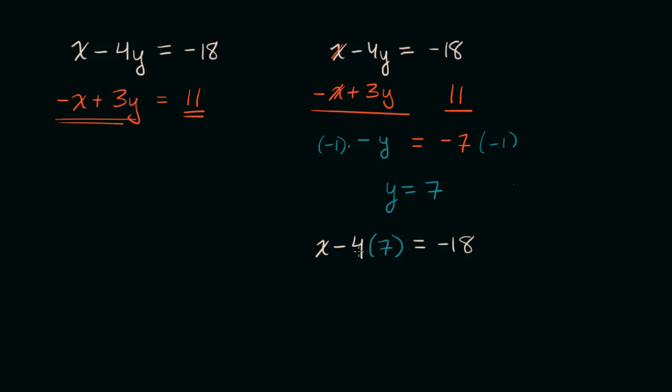And so let's see, 4 times 7, that is 28. So to solve for x, I could add 28 to both sides. So add 28 to both sides. On the left-hand side, negative 28, positive 28, those cancel out, I'm just left with an x. And on the right-hand side, I get negative 18 plus 28 is 10.